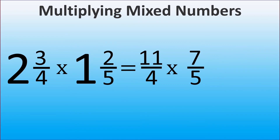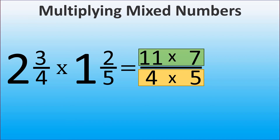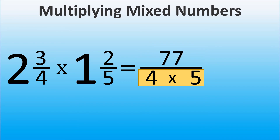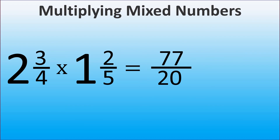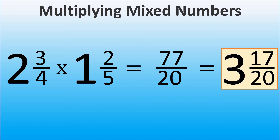Now we have 2 improper fractions that we can multiply. To multiply 2 fractions, we multiply the numerator by the numerator, and here 11 times 7 is 77. And then we multiply the denominator by the denominator, so 4 times 5 is 20. And 77 over 20 is 3 and 17 over 20.